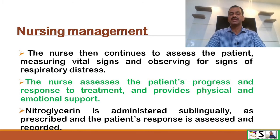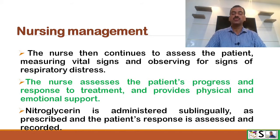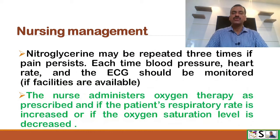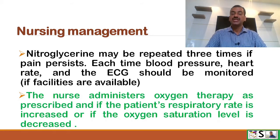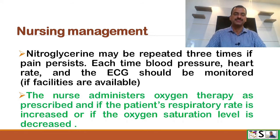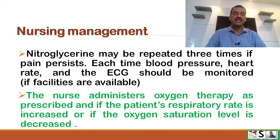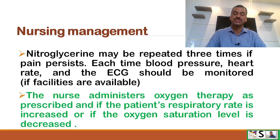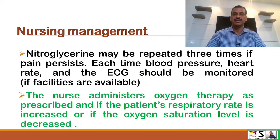Nitroglycerin is administered sublingually as prescribed, and the patient's response is assessed and recorded. Nitroglycerin may be repeated three times if pain persists; each time blood pressure, heart rate, and ECG should be monitored. The nurse administers oxygen therapy as prescribed, and if the patient's respiratory rate is increased or oxygen saturation level is decreased, oxygen inhalation may be needed.